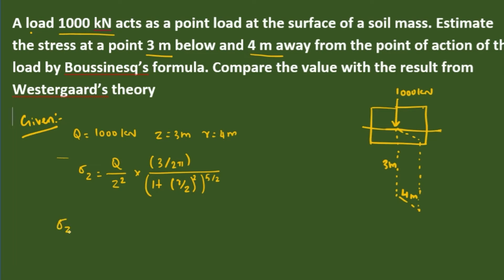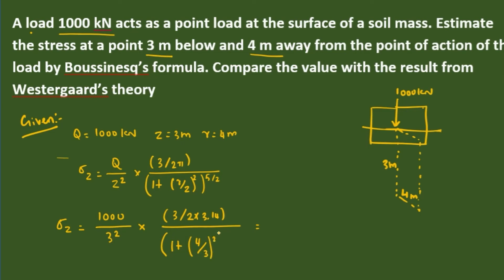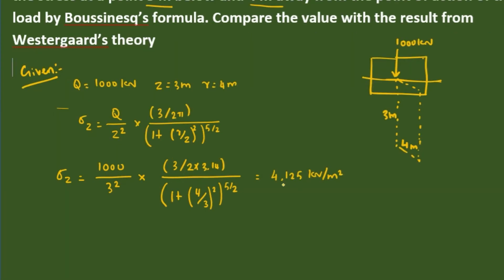Substituting the values: sigma Z equals 1000 divided by 3 squared, into 3 divided by 2 into 3.14, divided by 1 plus (4 divided by 3) whole squared, whole power 5 by 2. Solving this, we get the value of 4.125 kN per meter square. This is the value from Boussinesq's analysis.